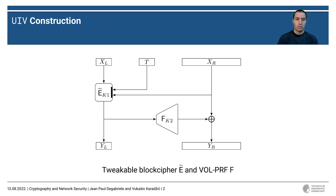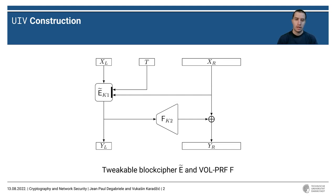We show how to construct efficient RPRPs by presenting the UAE construction, which consists of only two calls to a block cipher and a variable output length PRF. RPRPs are a notion built for variable input length tweakable ciphers, which one can use to construct AEAD schemes using the encode-then-encipher paradigm.